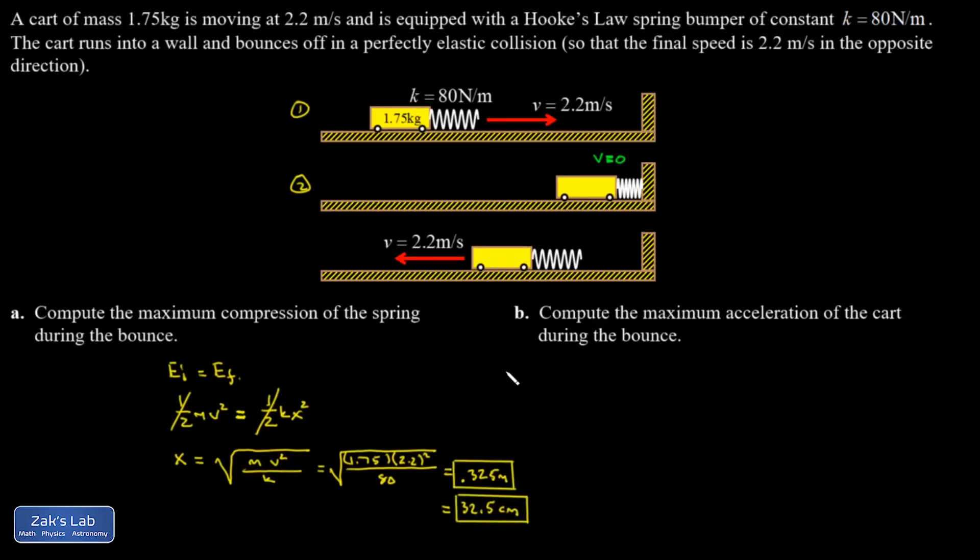In part B, we want the maximum acceleration of the cart during the bounce. So this occurs when the force on the cart is maximum, which means it occurs at the maximum compression of the spring. So that's what the spring force looks like pointing to the left.